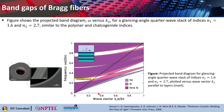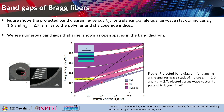Here you can see the projected band diagram plotted for normalized frequency versus normalized wave vector for a glancing angle quarter wave stack where the indices n₁ equals 1.6 and n₂ equals 2.7 — that is similar to the polymer and chalcogenate indices. What we see is numerous band gaps shown as open spaces. The yellow marked region shows the omnidirectional band gap.